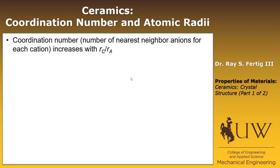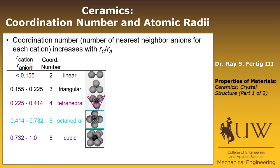The coordination number — the number of nearest-neighbor anions for each cation — increases with the ratio R_C to R_A. Looking at the table, the lower limit we just calculated was 0.155 for the triangular configuration with coordination number 3. We can similarly analyze the tetrahedral configuration (coordination number 4), the octahedral structure (coordination number 6), and finally the cubic structure (coordination number 8).